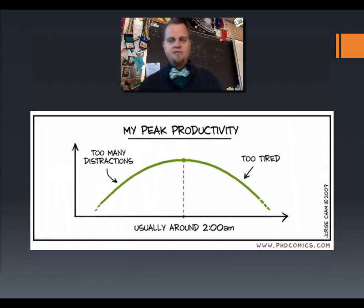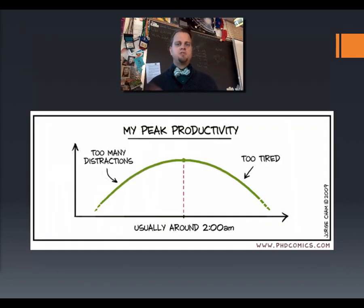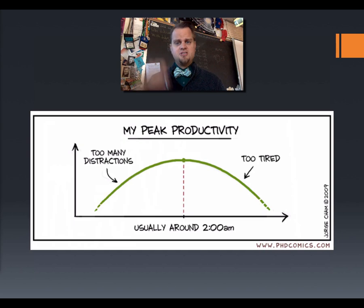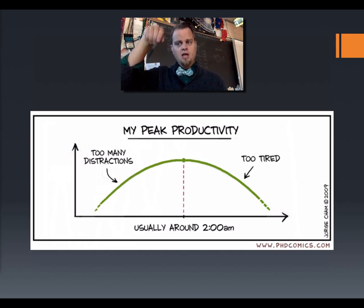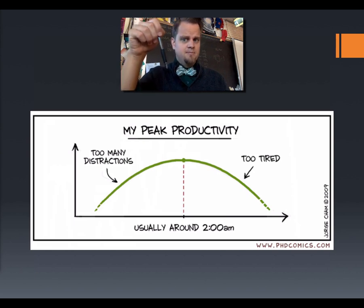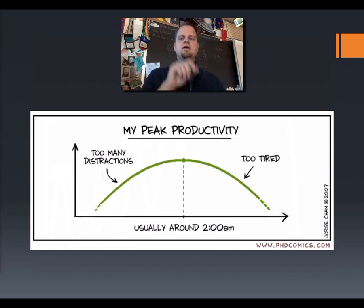Down here we have a graph that kind of expresses how productive I am. Somebody else made this up. It shows, in a somewhat funny fashion, how I'm not productive at first because I have too many distractions. Then I reach peak productivity around 2am, and then I get much too tired after that.